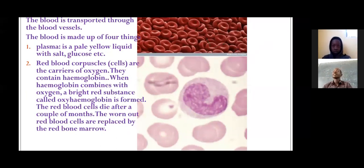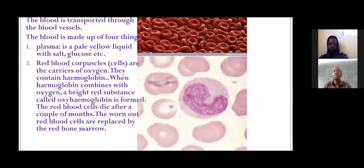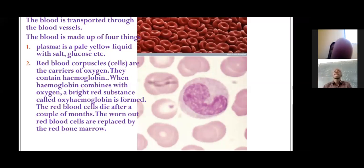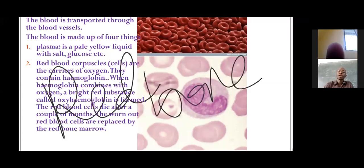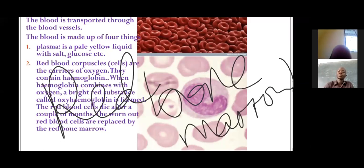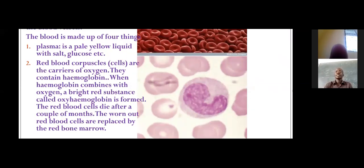Red blood cells are the ones which make the blood red. Their main function is carrying oxygen from the lungs to all other body parts where it is needed. Red blood cells do not live very long — they die after a couple of months, some not even reaching three months. The red blood cells which have died or been worn out are replaced by the red bone marrow.